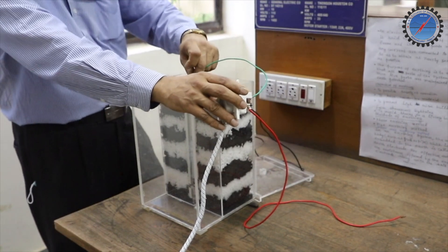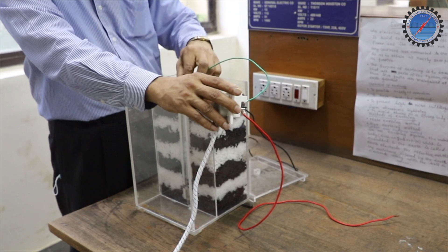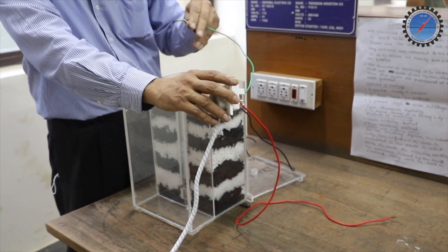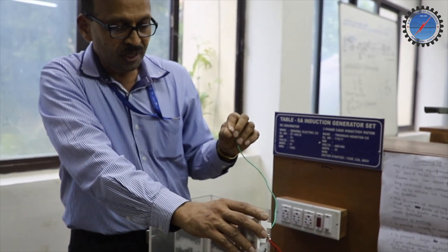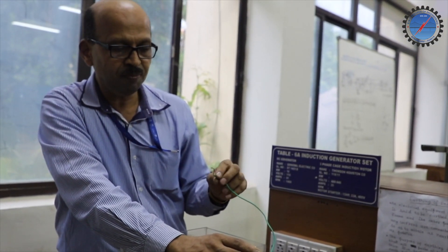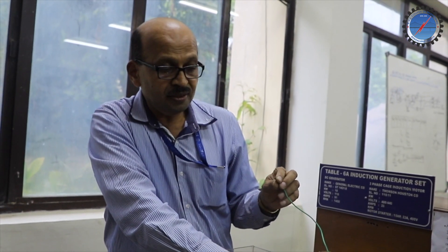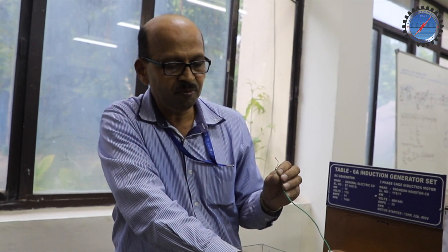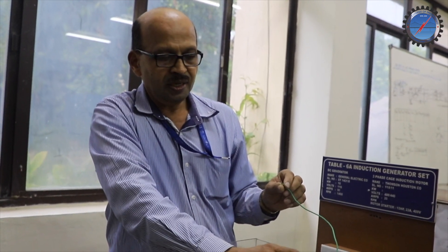If you are going for the plate earthing scheme, we are going to use the copper plate or GI plate. This is known as pipe earthing scheme. In the plate earthing scheme, the dimension of the plate is 60 centimeter by 60 centimeter by 3.18 mm for the copper plate. When you are going for the pipe earthing scheme or if you are using the GI plate, the plate dimension will be 60 centimeter by 60 centimeter by 6.35 mm.